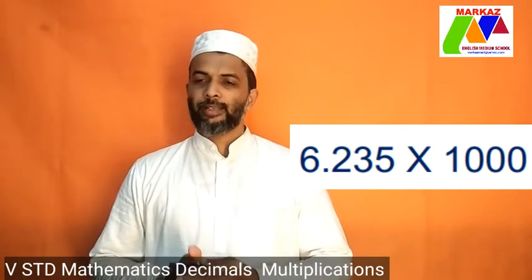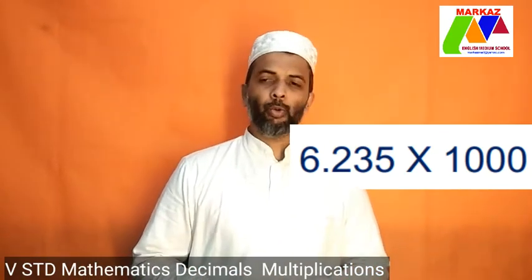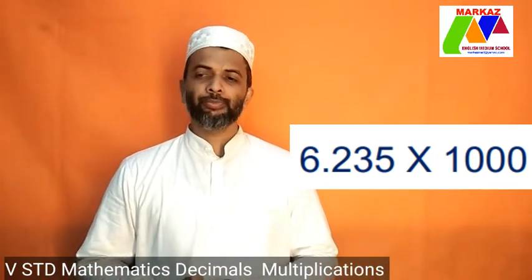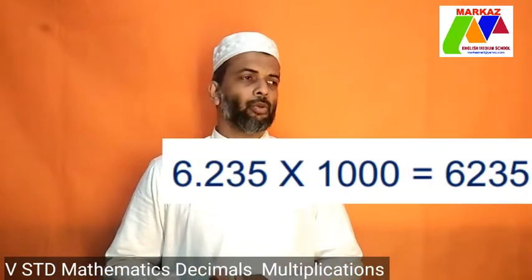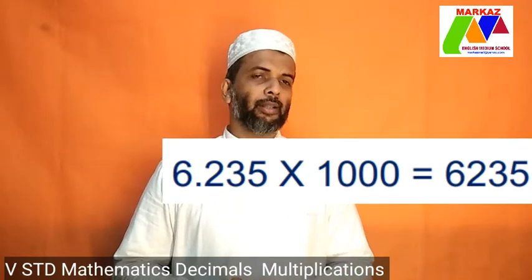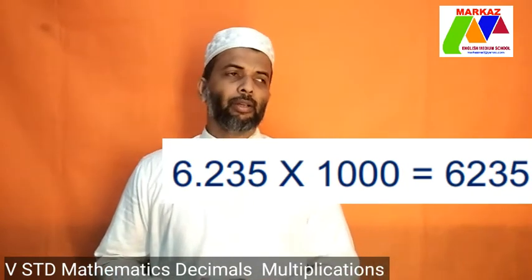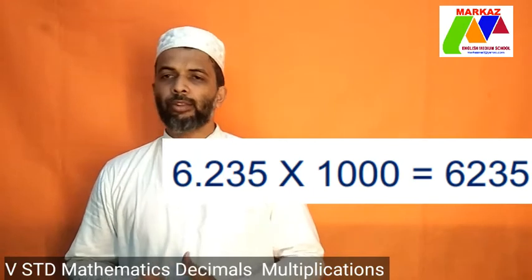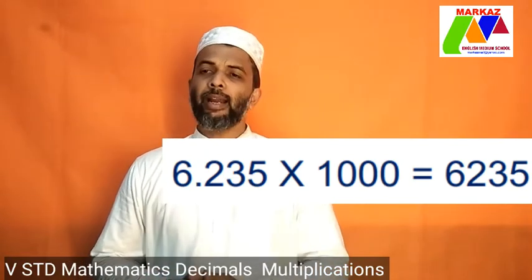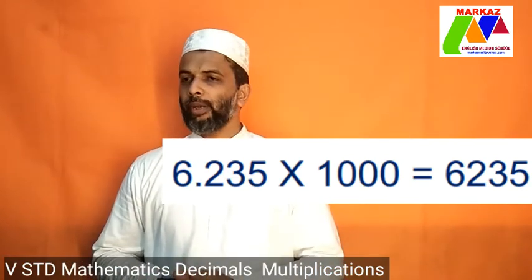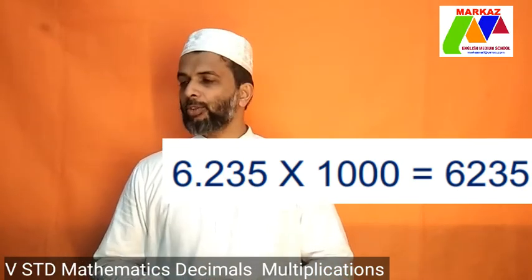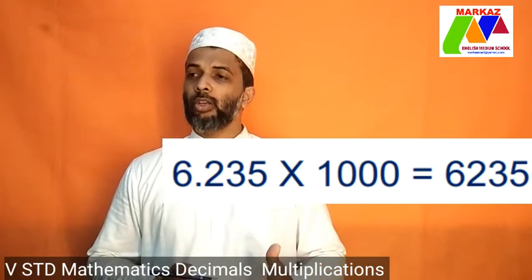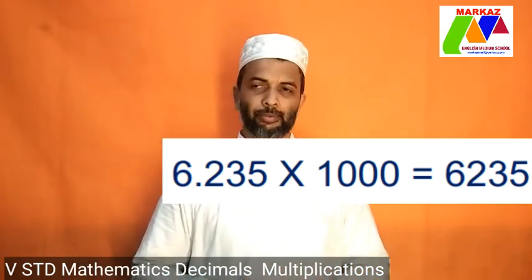Remember, to multiply by 10, 100 and 1000, shift the decimal point as many places to the right as there are zeros after 1.